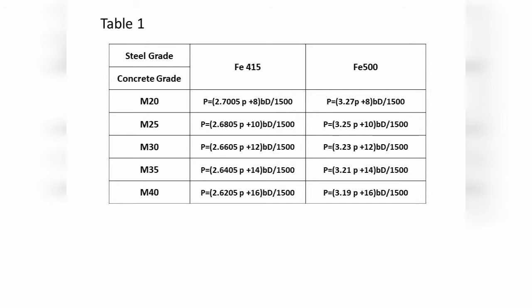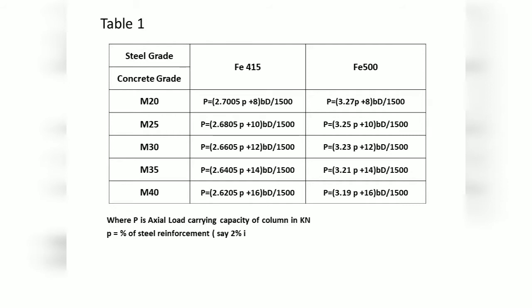In the formula, P is the Safe Load Bearing Capacity of the column in KN. Small p is the percentage of steel — for example, 2% of steel. B is the breadth in mm and D is the depth of the column in mm.